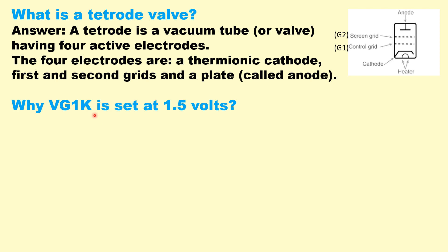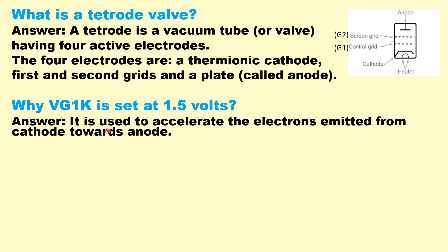Why is Vg1k set at 1.5 volts? It is used to accelerate the electrons emitted from the cathode towards the anode. There is a positive potential between the cathode and grid G1 to accelerate the electrons.